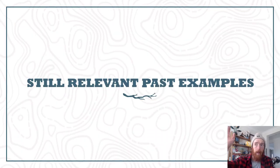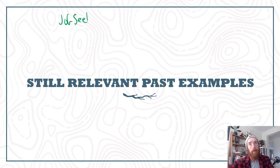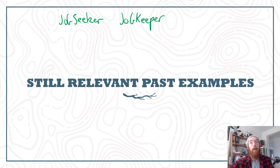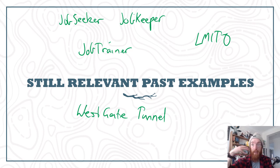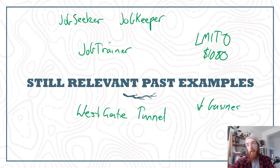A quick recap of still relevant past examples: JobSeeker and JobKeeper are still relevant and work really well as aggregate demand and aggregate supply side tools respectively. There's also JobTrainer, which was an education and training aggregate supply side policy to give people skills in areas where we have skill shortages. The Westgate Tunnel Project remains relevant as a long-running infrastructure project. You can also use the low and middle income tax offset — the $1,080 figure from past years before it became $1,500 this year is still relevant. And decreasing business tax for small and medium-sized businesses to 25% is also pretty useful to reference.